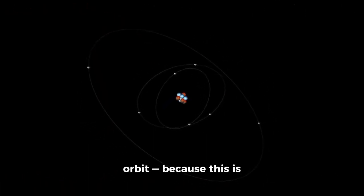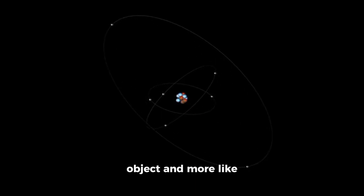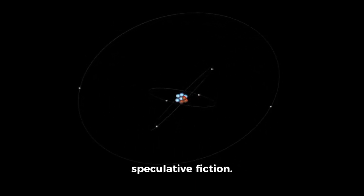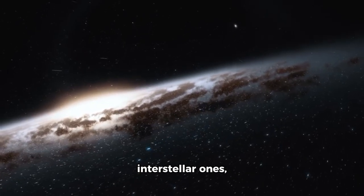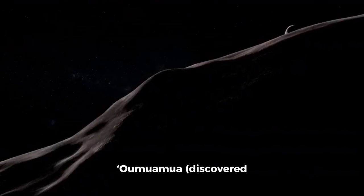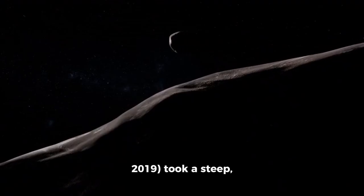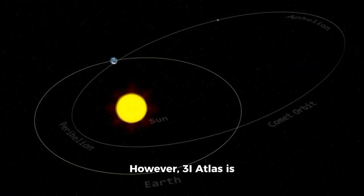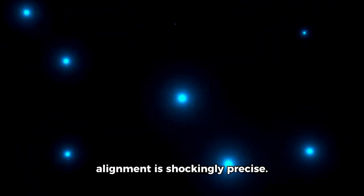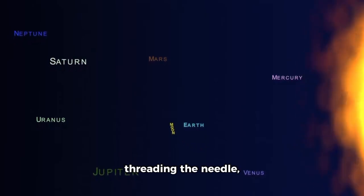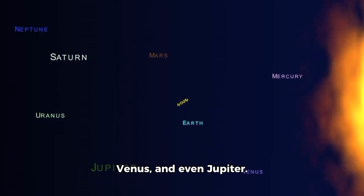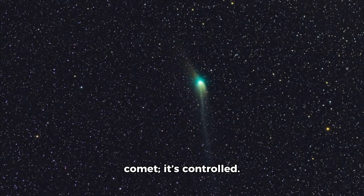Let's talk about its orbit, because this is where 3i Atlas starts to feel less like a natural object and more like something out of speculative fiction. Most comets, especially interstellar ones, follow chaotic paths. Oumuamua discovered in 2017 tumbled erratically through our solar system, while Borisov spotted in 2019 took a steep, angled trajectory. However, 3i Atlas is gliding along a near-perfect path, just five degrees off the ecliptic, the plane of our solar system's planets. For an object that originated in another star system, this alignment is shockingly precise. It's threading the needle, coming close to Mars, Venus, and even Jupiter. This isn't the wild, reckless plunge of a rogue comet - it's controlled, almost deliberate.